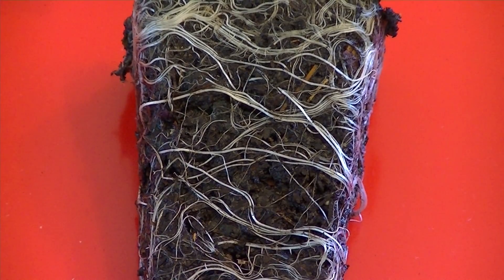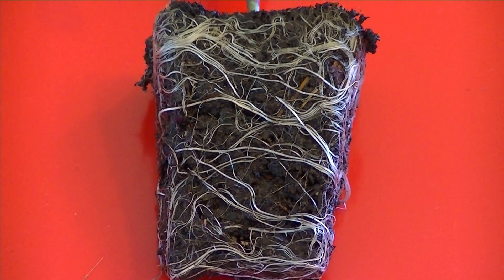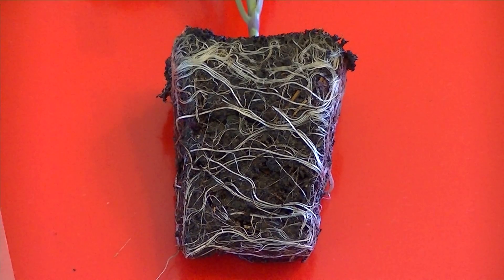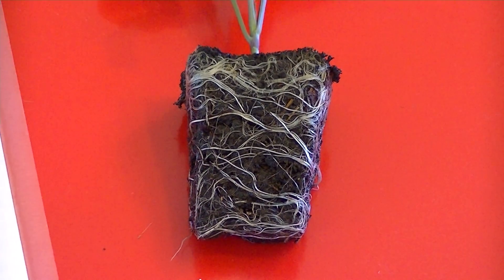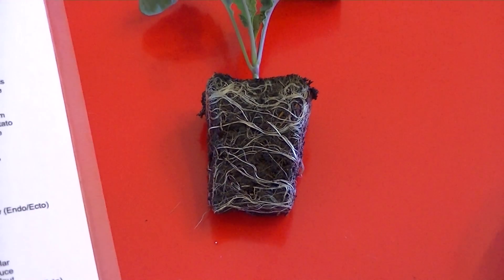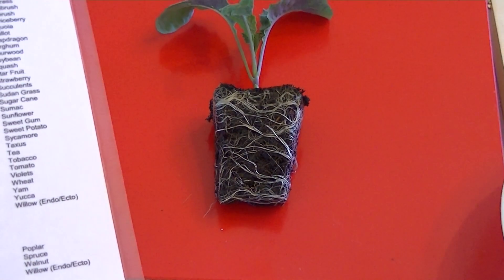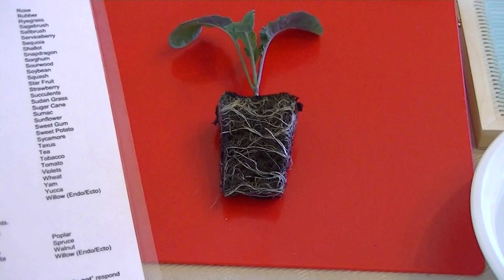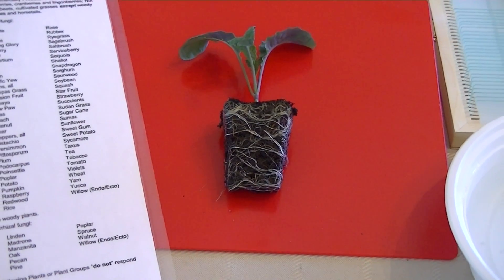especially on kale plants. I was always wondering, how can a kale plant get nutrients from its roots in the ground when it doesn't use any type of mycorrhizal fungi? When it doesn't use the endo or the ecto mycorrhizal fungi? So I'm going to try to find out.